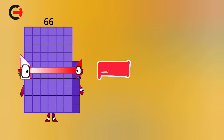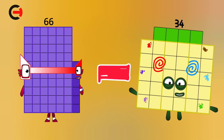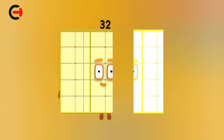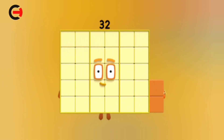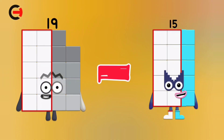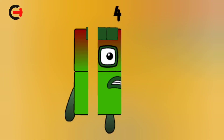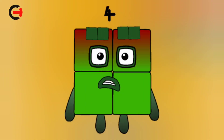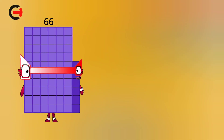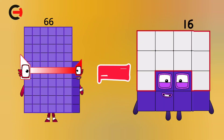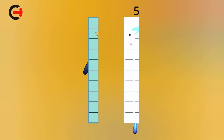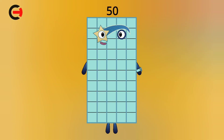66 minus 34 is equal 32. 19 minus 15 is equal 4. 66 minus 16 is equal 50.